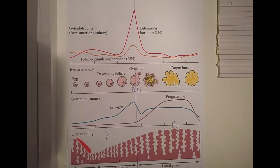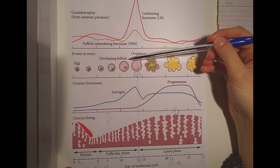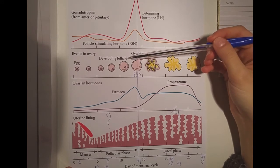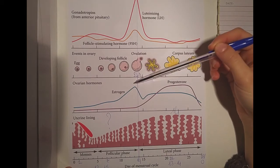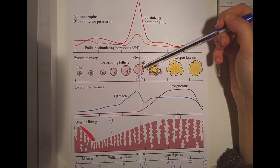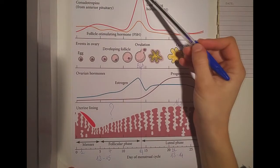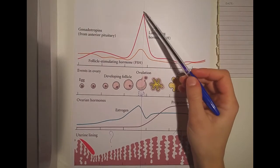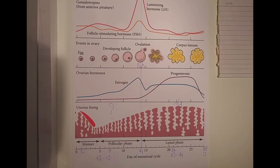It is this peak of estrogen that induces a higher peak in the LH hormone, which makes ovulation happen. So to summarize: FSH matures the follicle, the follicle increases estrogen levels, estrogen peaks, and right after that there's an LH peak which induces ovulation.